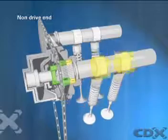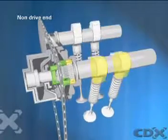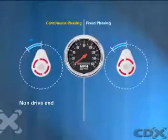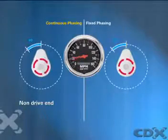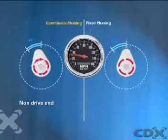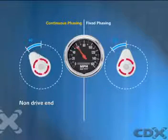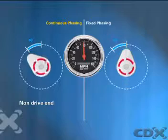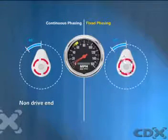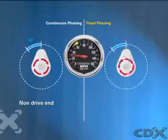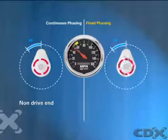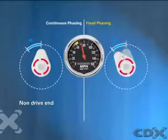Phasing change is either continuous or fixed. Continuous systems normally vary the phasing angle between 0 and 40 or more degrees, according to engine load and speed requirements. Fixed phasing systems alter phasing by a specific angular value, at a specific speed and load condition.